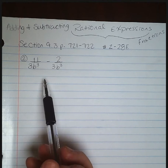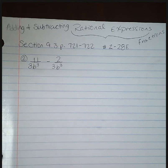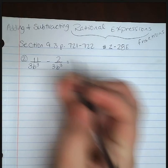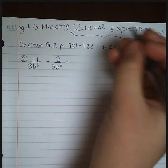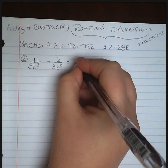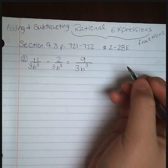That bottom number has to be the exact same in order for you to add or subtract. So on the directions, they say perform the indicated operations and simplify your results. Since we do have a common denominator here, we can go ahead and combine the terms. We will subtract 11 and 2 to get 9, then keep your same denominator of 3b to the 3rd.